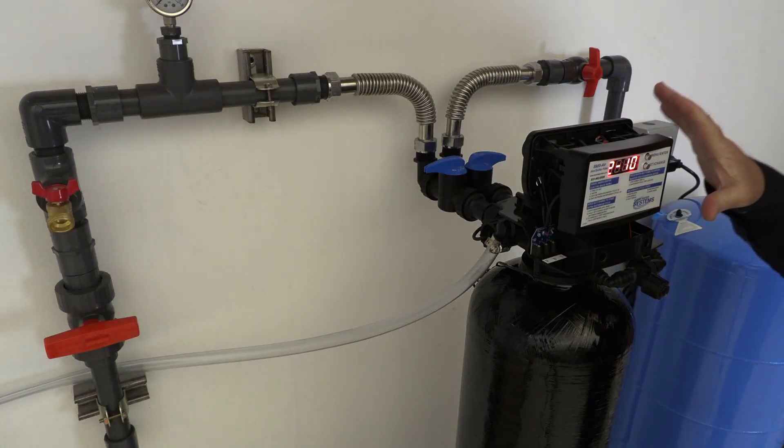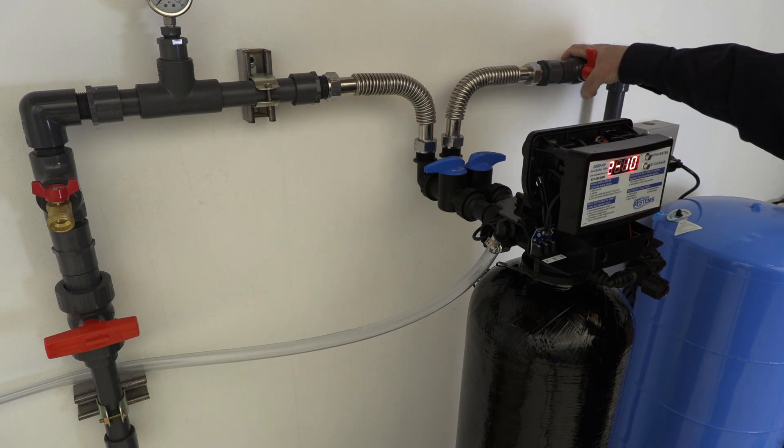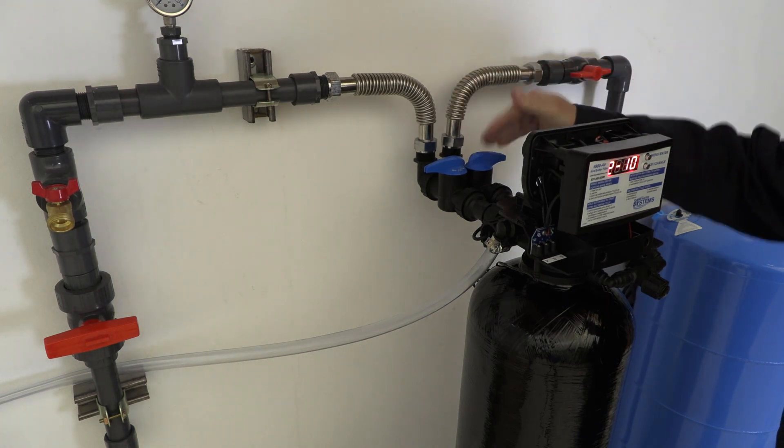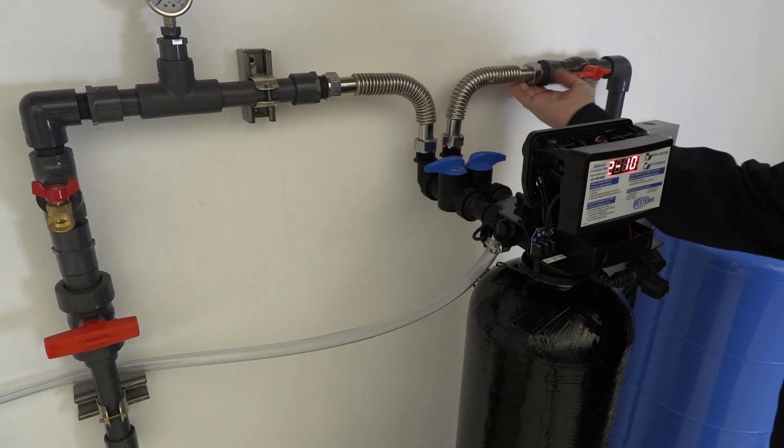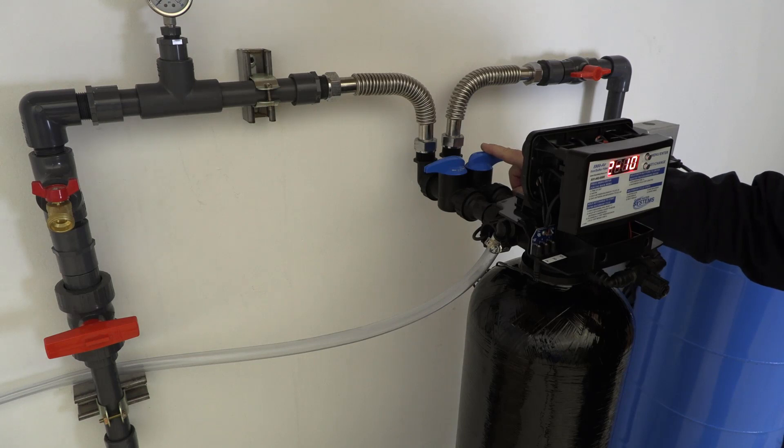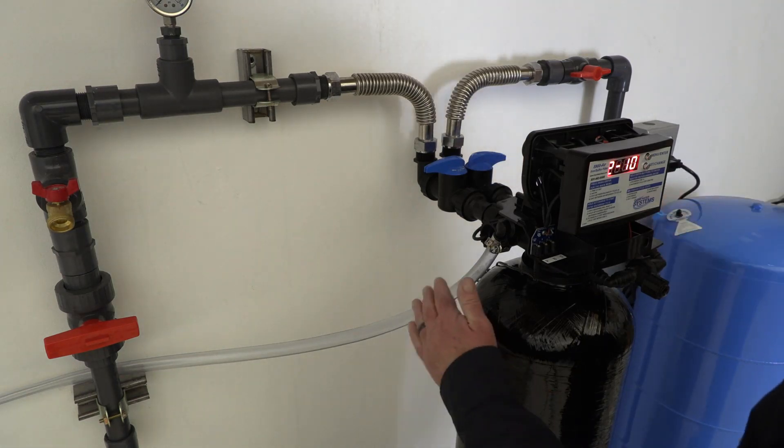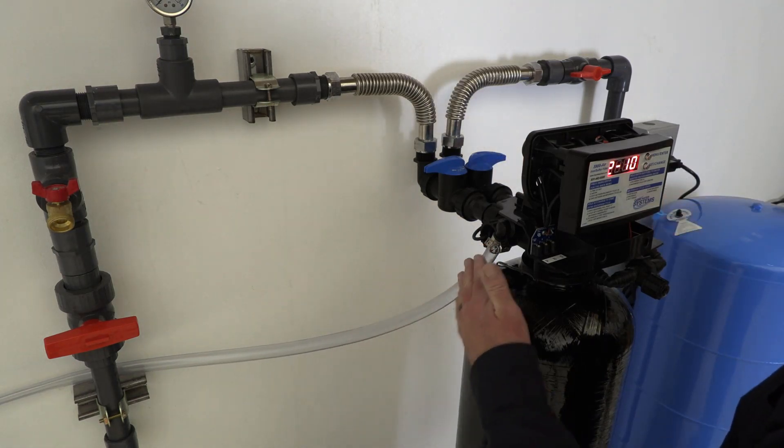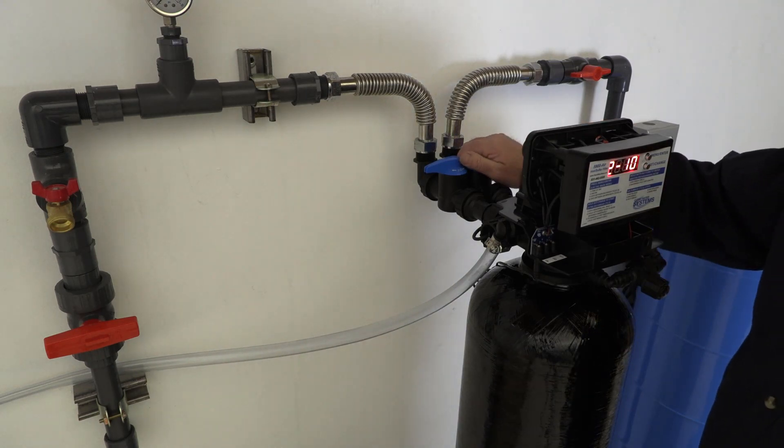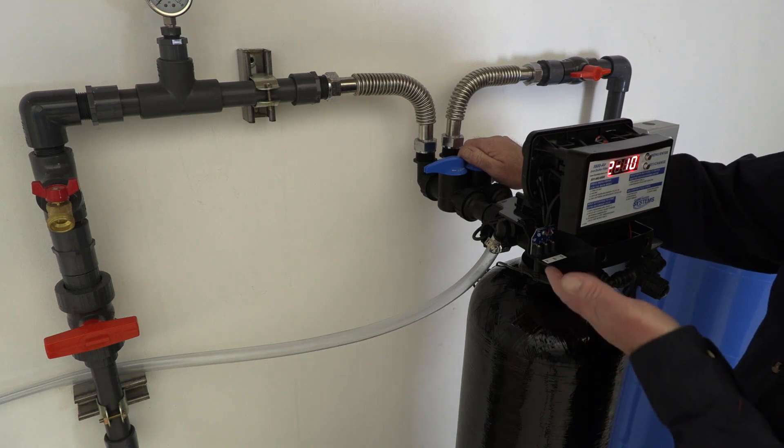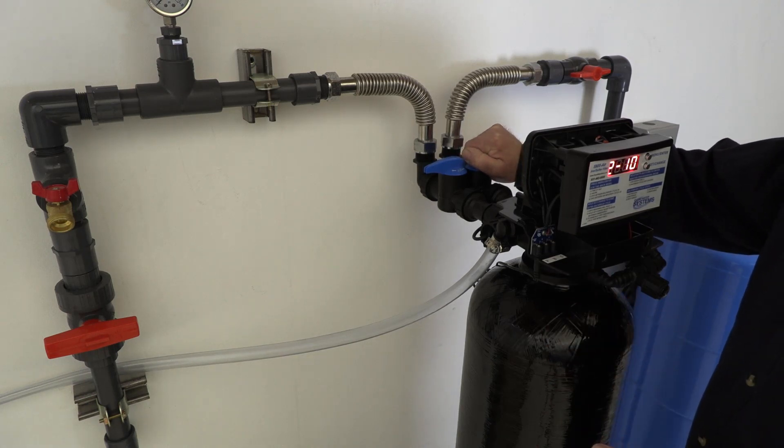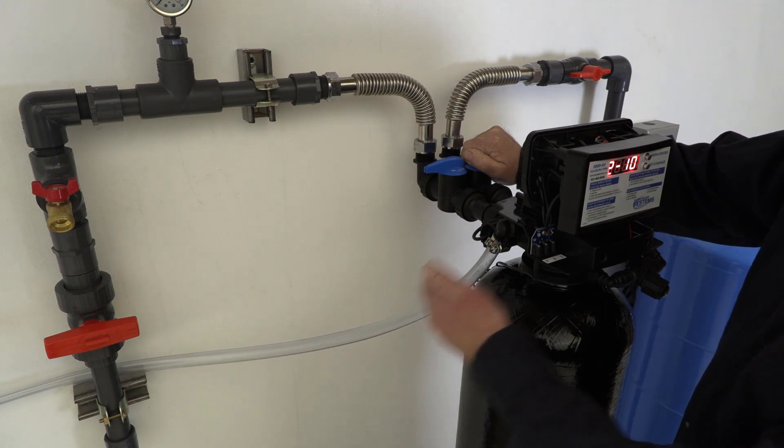So our valve is now in the backwash cycle. We're going to go ahead and bring our inlet pressure on, so now we have water pressure up to here. Leak check your fittings, make sure you don't have any leaks. We're going to slowly open the inlet valve on the bypass valve. What we're going to see is some aeration come out of the drain valve right here. What we want to do is do this very slowly—we don't want to blow the media back up into the valve head.